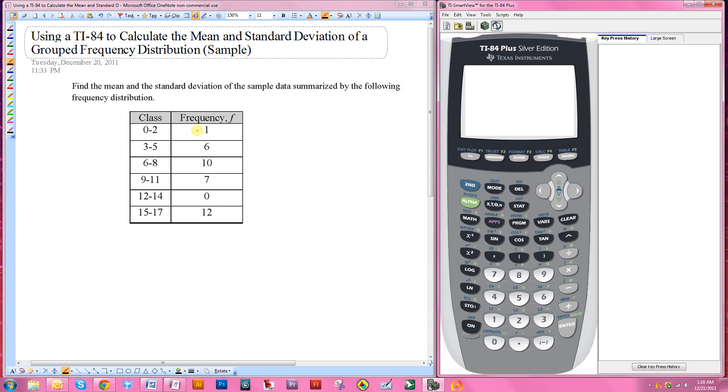So instead of saying there's one data value between 0 and 2, we're going to say that there is one data value that is the number 1. Here we'd say there are six data values that are the number 4. So what I recommend doing is adding a third column, label it midpoint.